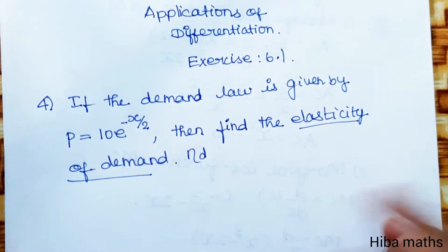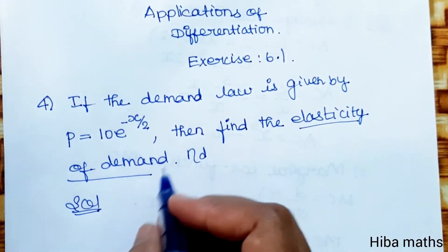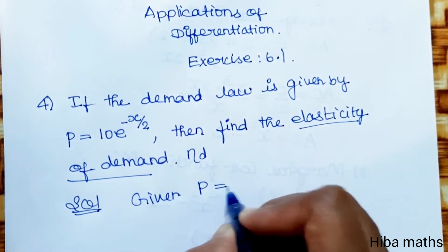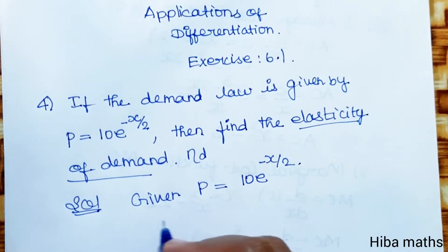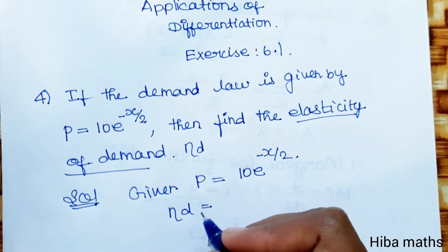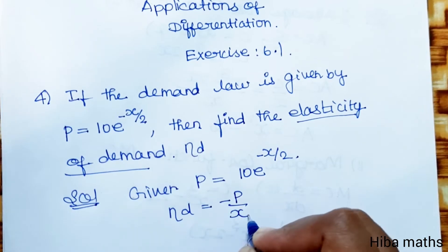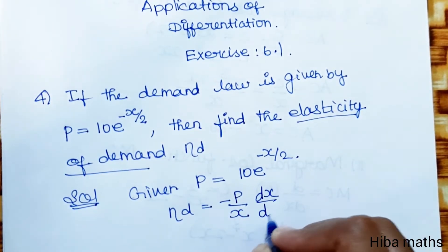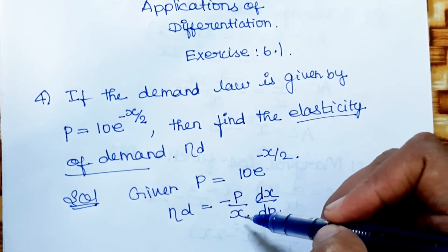If you know the formula it will be easy to solve. Given: p = 10·e^(−x/2). The formula for elasticity of demand is η_d = −(p/x)·(dx/dp).